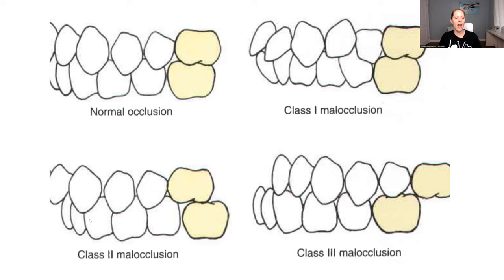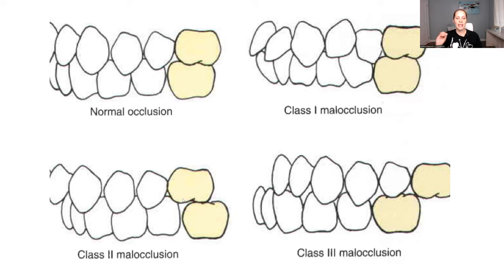What about class two? The easiest way to think about this one is to again look at the first molar on the top — it's going to be more mesial to the first molar on the bottom. That's it. If you want to get more specific, think mesial to the first molar on the bottom. So look at normal occlusion here, and then you have class two over here.